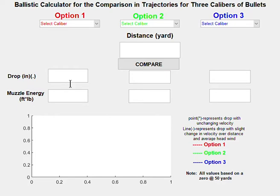To show how it works, we can select three different caliber bullets that you would like to compare, type in a certain yardage that you would like, let's say 100 yards.